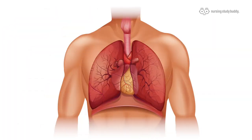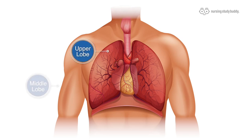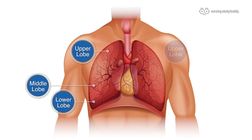All right everyone, now let's get into the lungs. The right lung has three lobes while the left lung has two. In the right lung we have the upper, the middle, and the lower, and in the left lung we just have the upper and the lower.